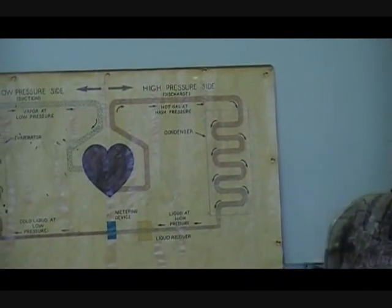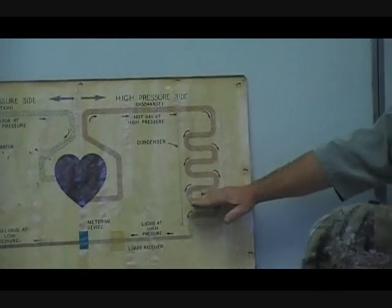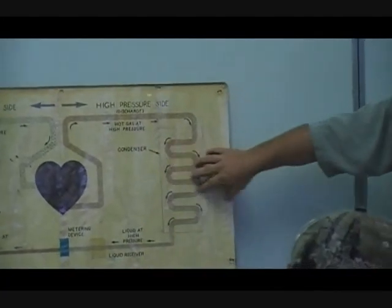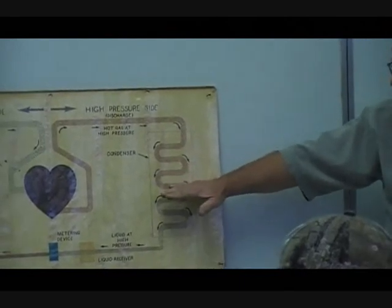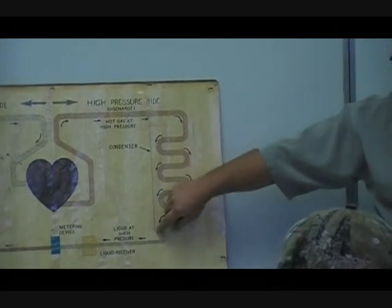The condenser de-superheats the gas. Once that sensible heat is removed, it then goes through a latent heat process. Latent heat changes state — it starts condensing. That's where the condenser gets its name: as the heat is removed from the refrigerant, it starts condensing and turns into a liquid. When it's all liquid, it sub-cools the liquid in the last pass or two. Sub-cooling is sensible heat below the saturation or boiling point. It then enters into the liquid line.